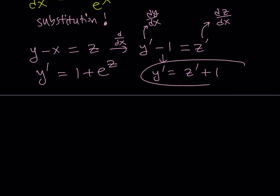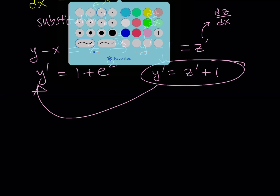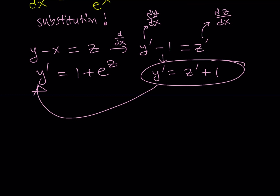From here I can isolate y prime and write it as z prime plus 1. And this I can substitute back. Now let's proceed: I'm going to replace y prime with z prime plus 1, giving z prime plus 1 equals 1 plus e to the power of z.